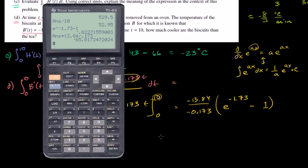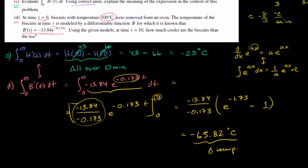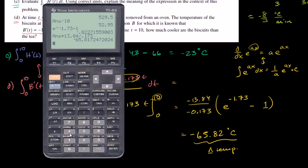So the change in temperature for the biscuits is negative 65.82 degrees Celsius. They started at 100 degrees and went down by 65.82 degrees over the 10 minutes.